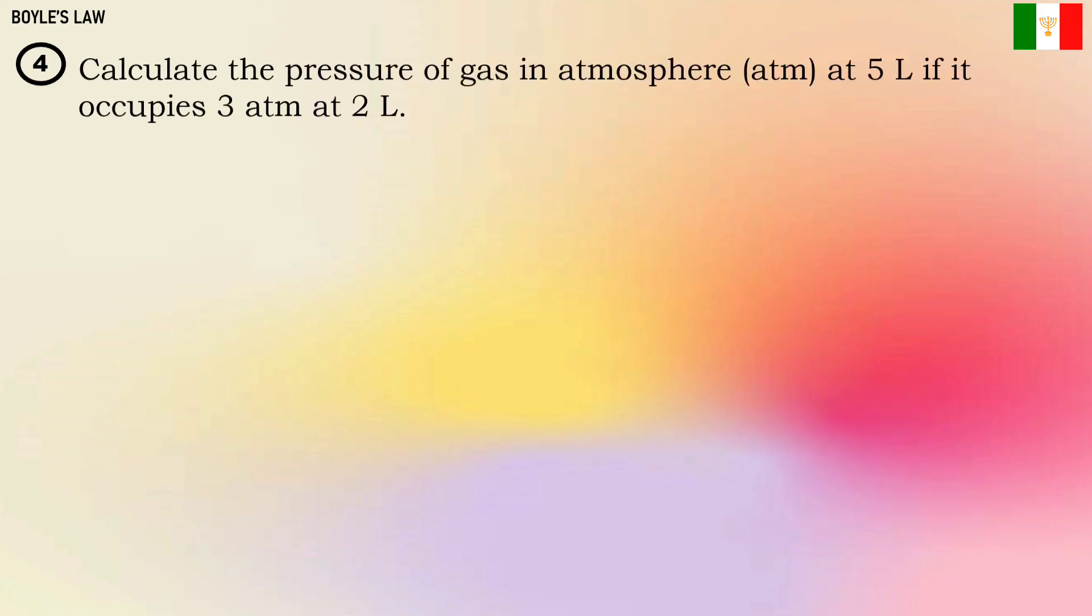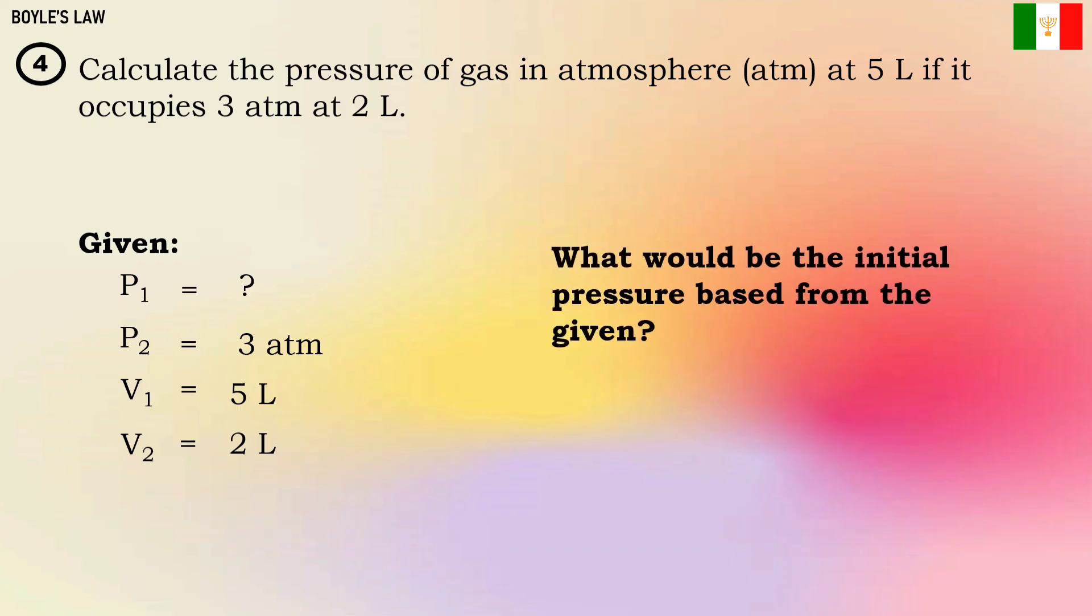Let's move to the last sample problem solving. Calculate the pressure of gas in atmosphere at 5 liter if it occupies 3 atmosphere at 2 liter. As you can see, we'll use the same steps. Write the given and analyze first what will be the outcome of your solving. The volume decreased, so we expect our answer will be an increase in pressure.